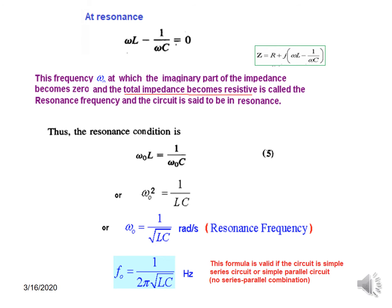If we want to express the resonance in hertz, we convert ω into frequency using ω = 2πf, so 2π moves to this side and we get the formula for the resonance frequency in hertz.